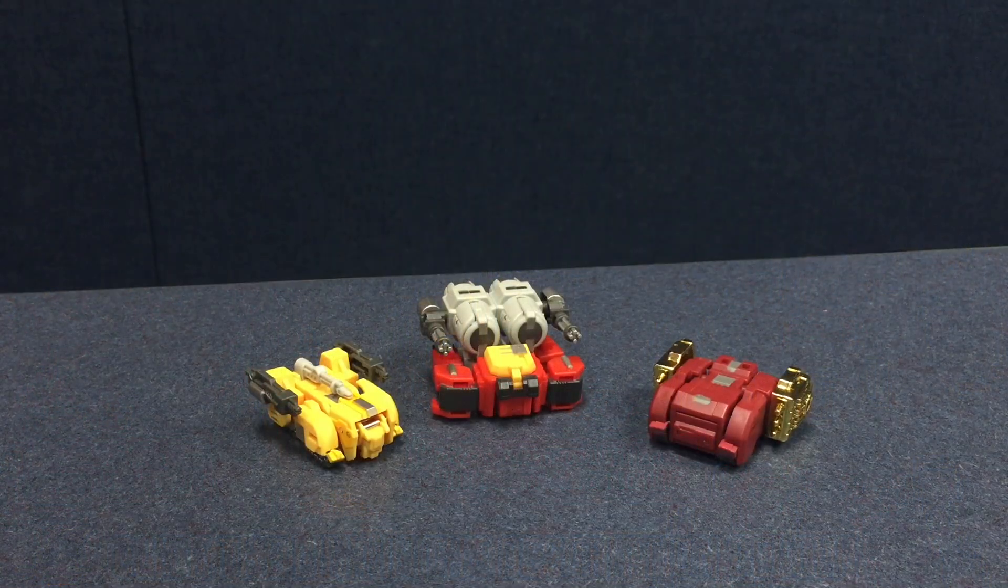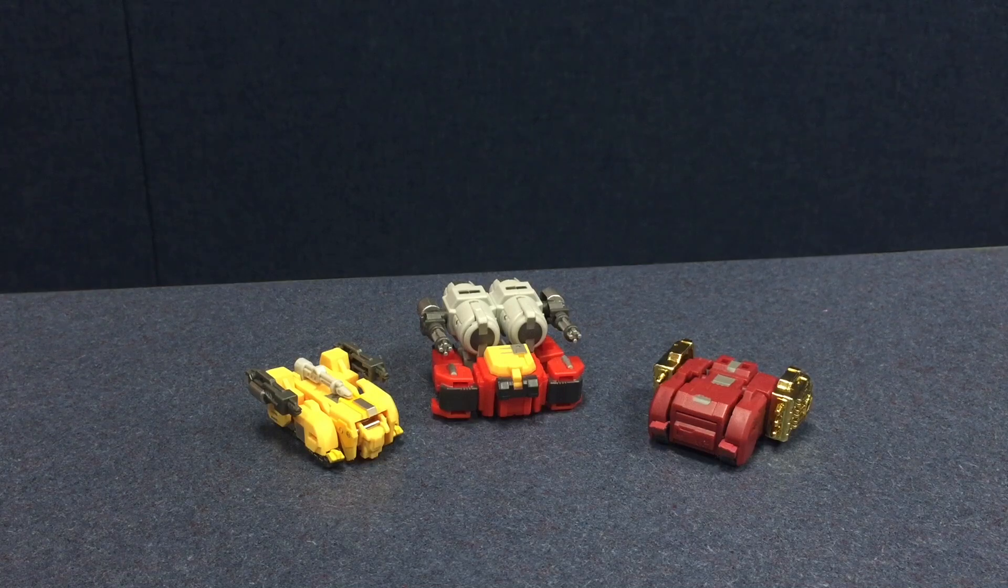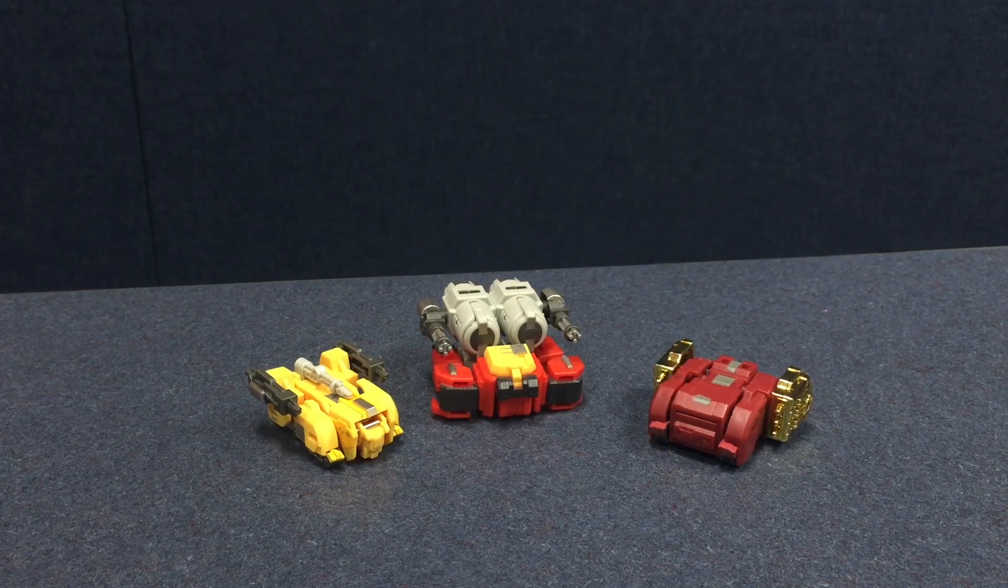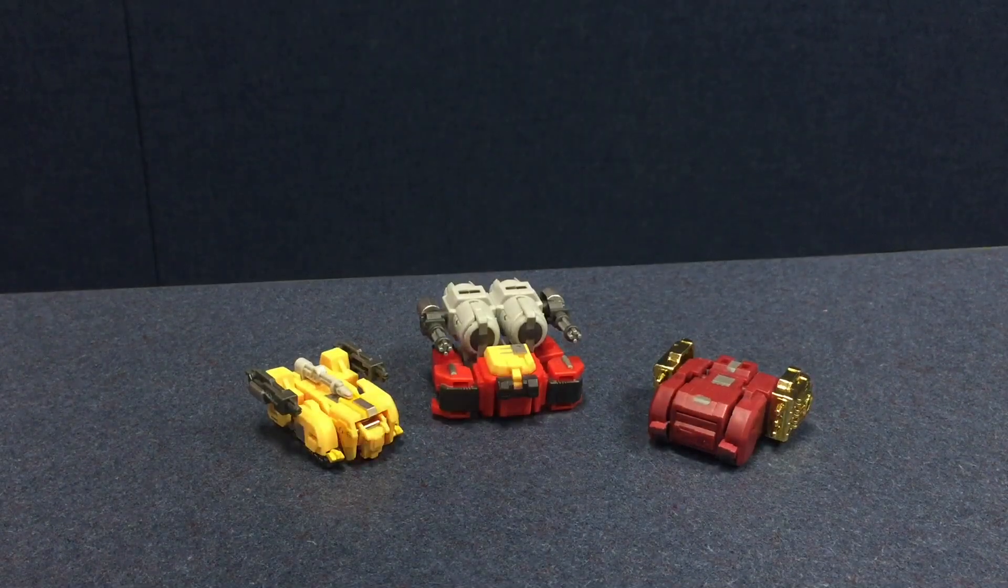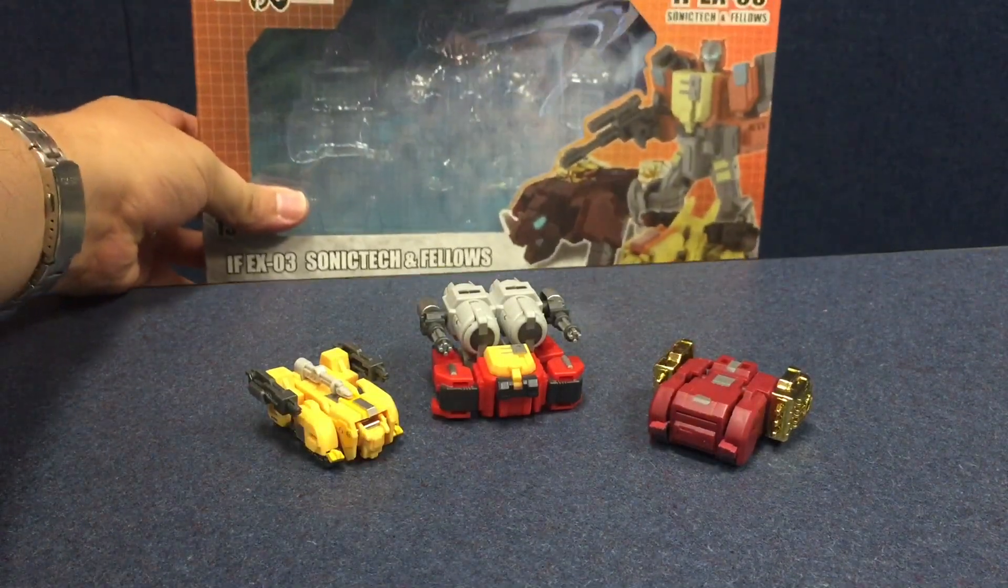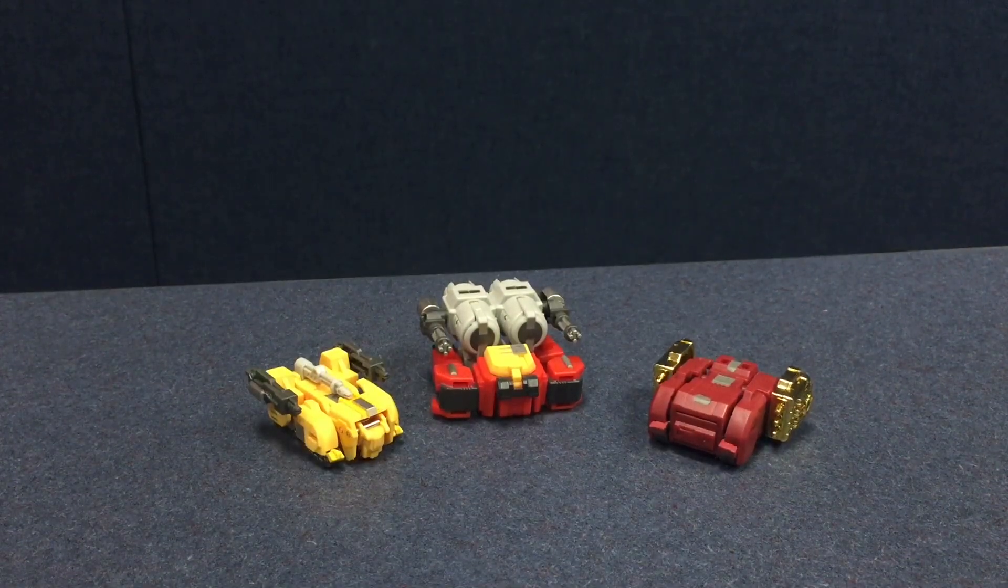All right, here's a video review for Iron Factory's IF-EX-03, the Armed Intelligence Squad, Sonatech and Fellows. It comes with Sonatech, Leo Treble, and Bass Rhino. It comes in a window box just like that.